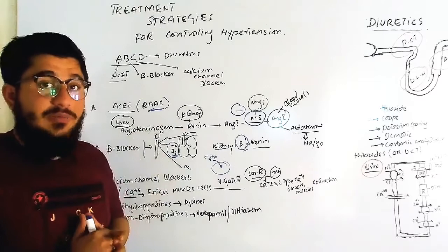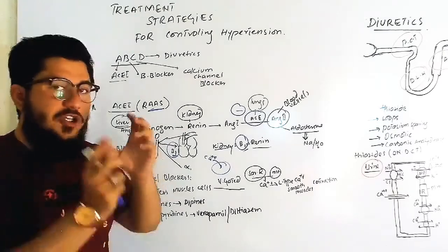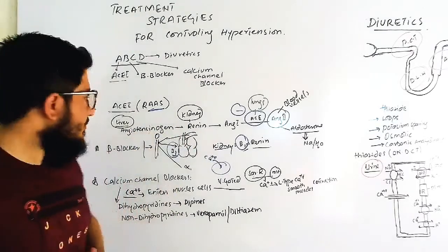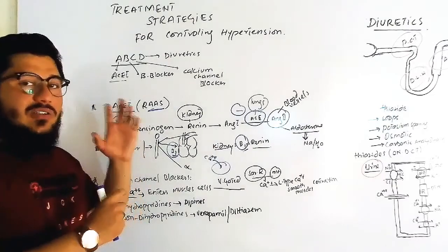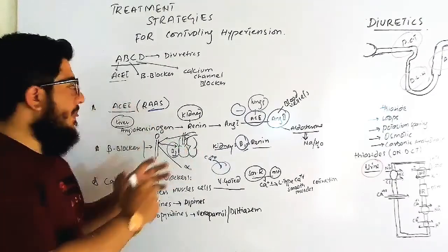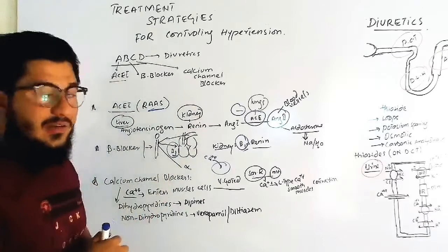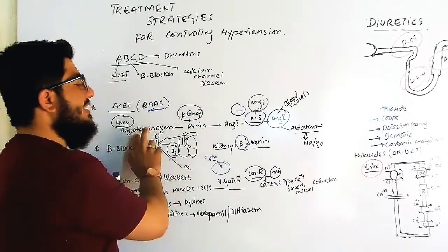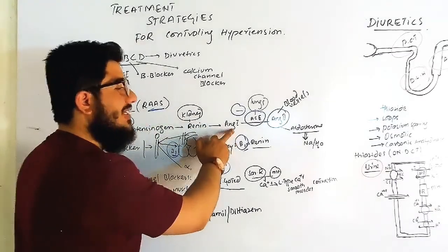I will give you a short review here. The liver will release angiotensinogen. Kidneys will release renin, which will convert angiotensinogen to angiotensin 1.